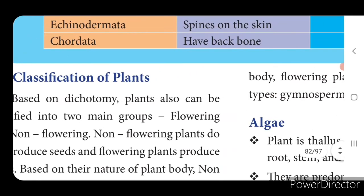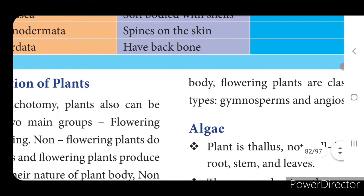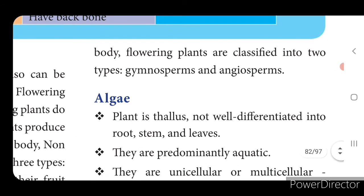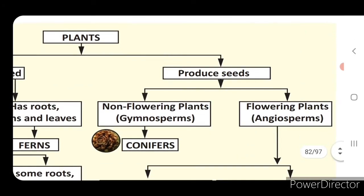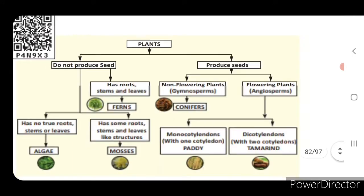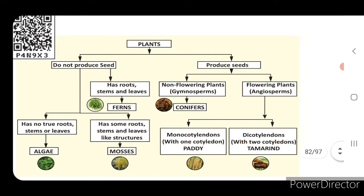Based on their fruiting body, flowering plants are classified into two types: gymnosperms and angiosperms. So you can see this classification diagram - plants are classified into two main groups: those which do not produce seeds and those which produce seeds.